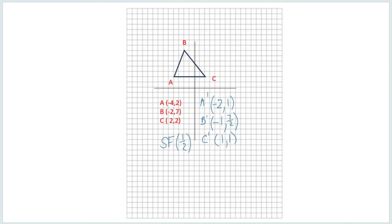So now we can graph. So if we go to negative two, one, we're right here. If we go to negative one and positive three and a half, and C prime would be one, one, which is right there, going to be our C prime. And then we can draw our new triangle, which has shrunk or reduced because our scale factor is less than one.